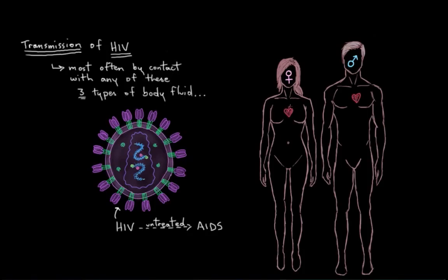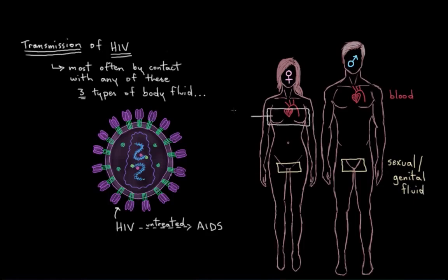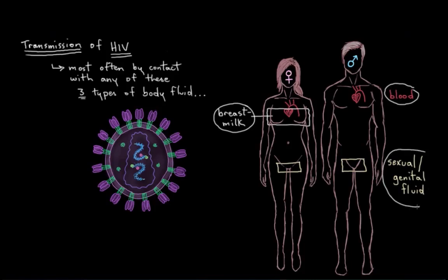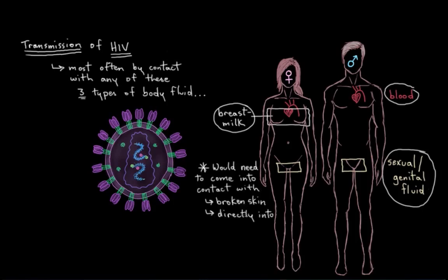Contact with their blood, with their sexual or genital fluid, and from breast milk contact. These infected body fluids would need to come into contact with broken skin or directly with your bloodstream, maybe via an injection, or they'd have to come into contact with one of your mucous membranes — parts of your body that aren't protected by normal skin.